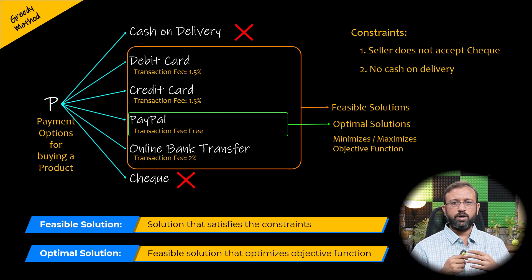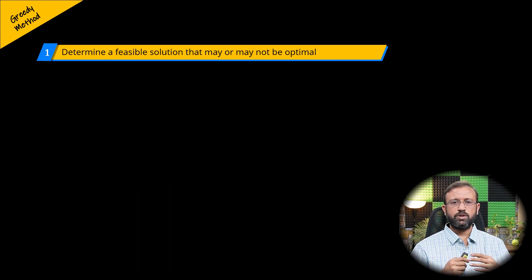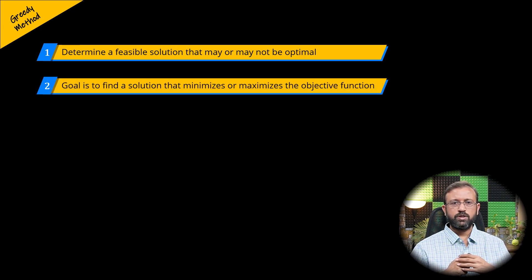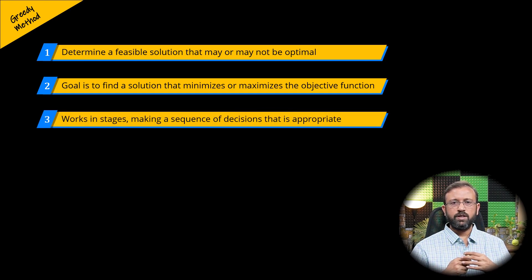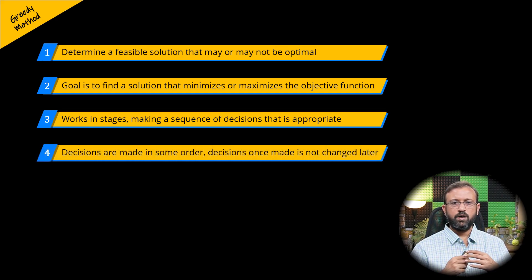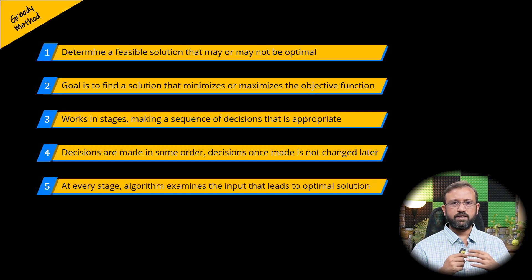A few important points with respect to the greedy approach: Greedy algorithms are used to determine a feasible solution that may or may not be optimal. The ultimate goal is to find a feasible solution that minimizes or maximizes an objective function — this solution will be an optimal solution. The greedy algorithm works in stages by making a sequence of decisions that seem most appropriate at the moment. Decisions are made one by one in some order, and a decision made once is not changed later. At every stage, the greedy algorithm examines an input to see whether it leads to an optimal solution.